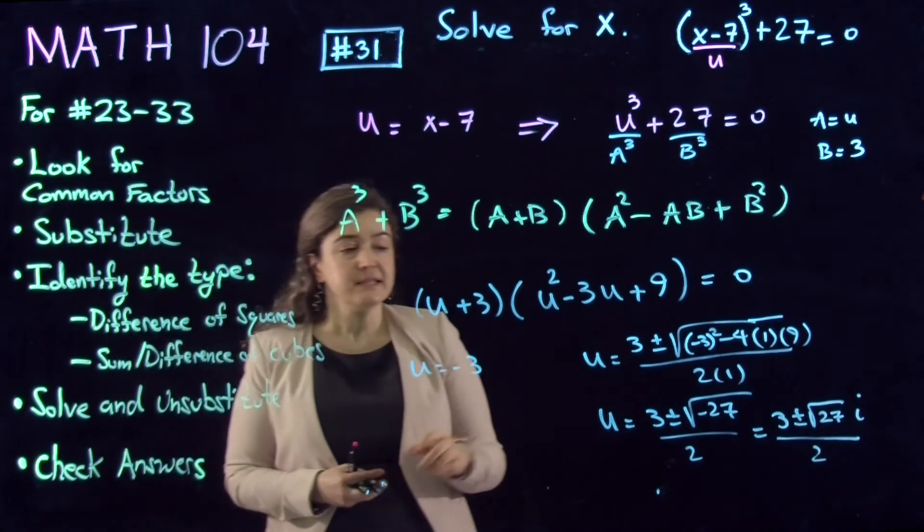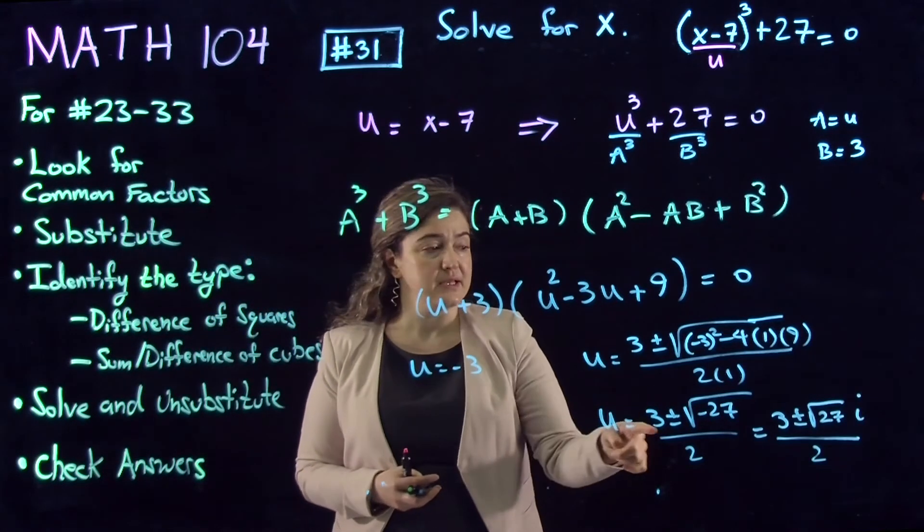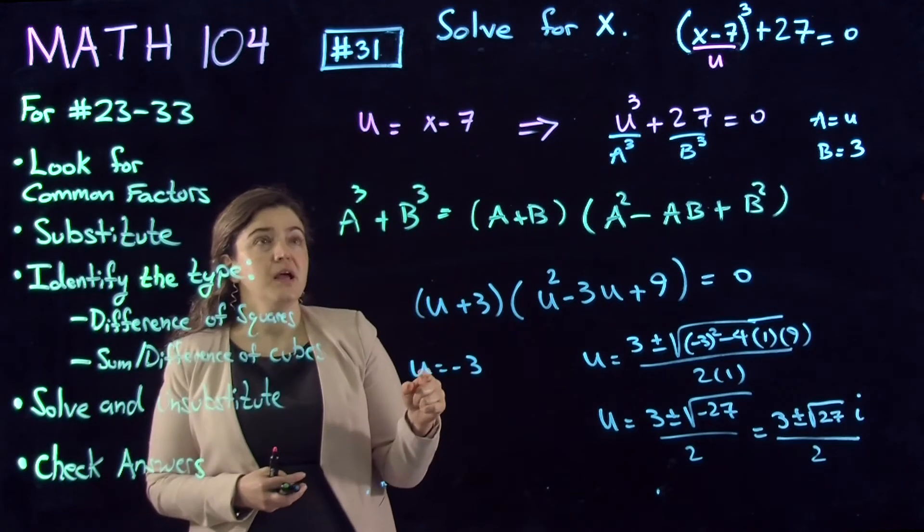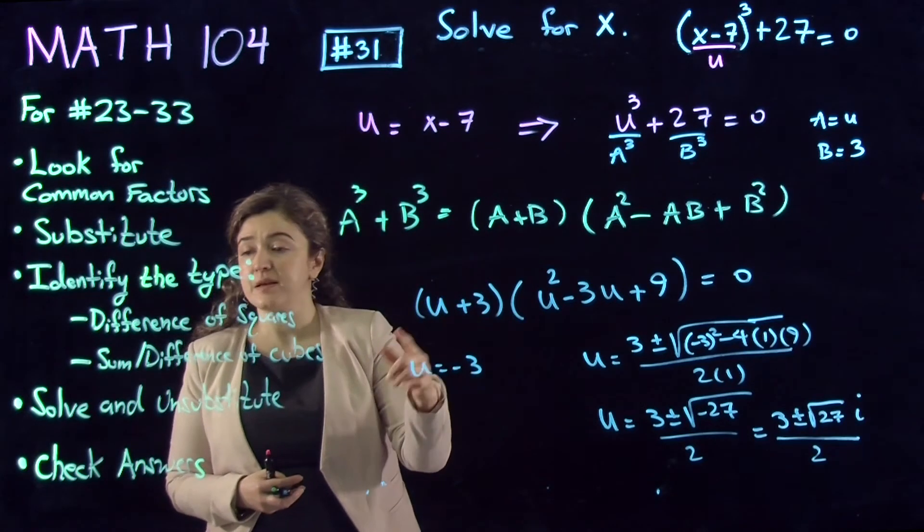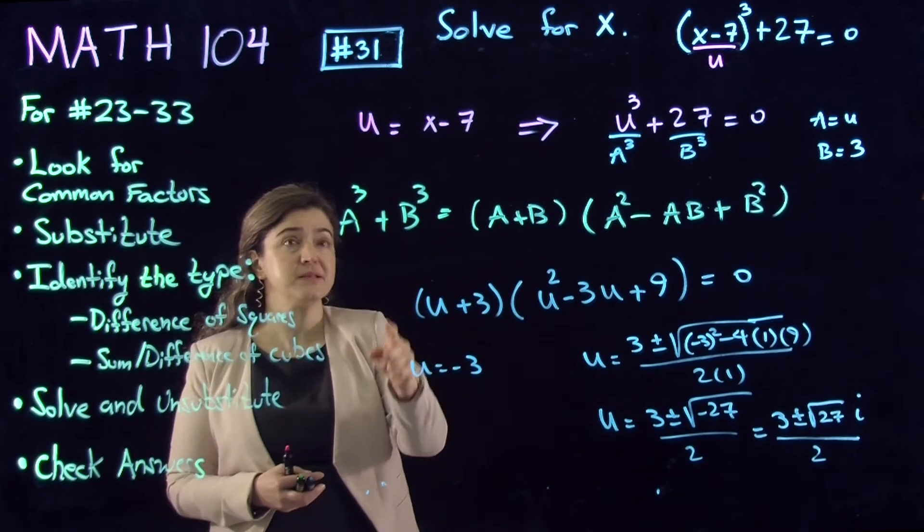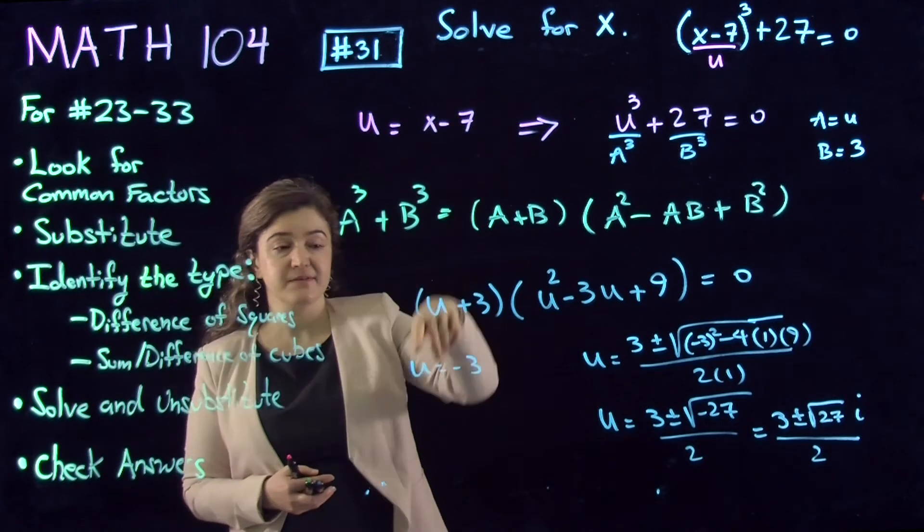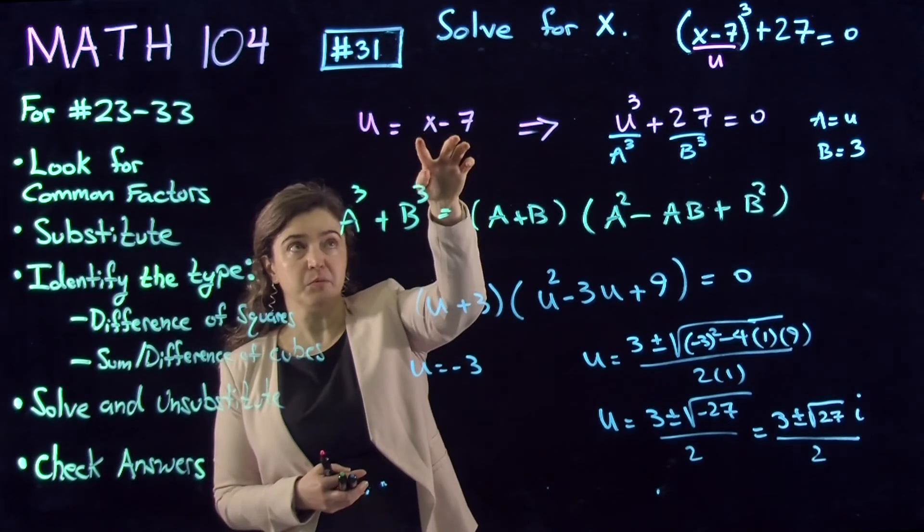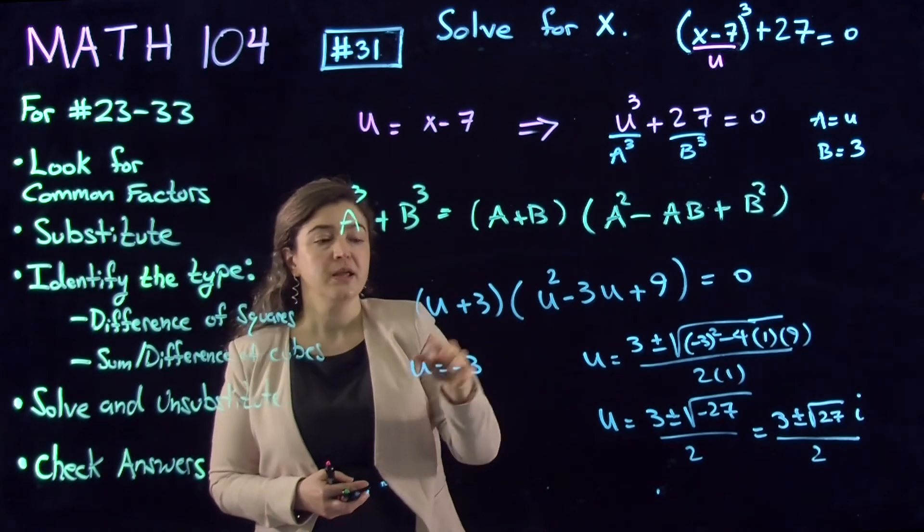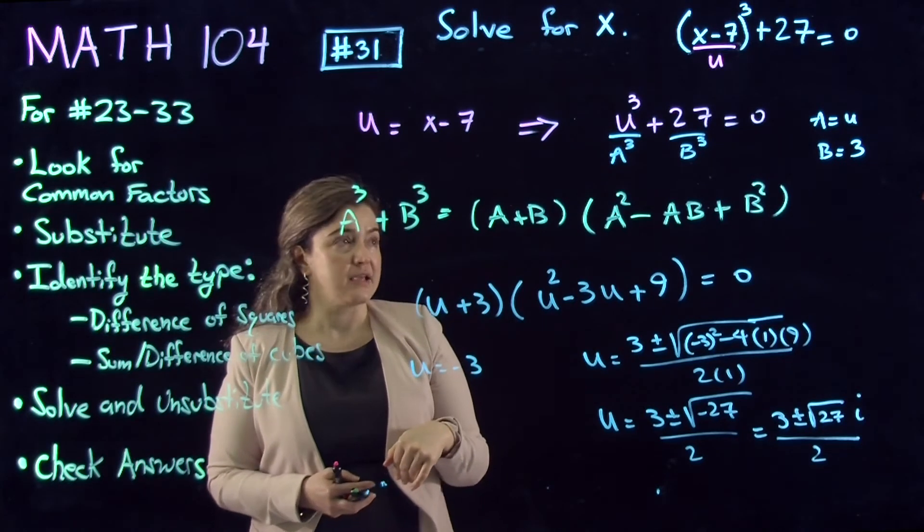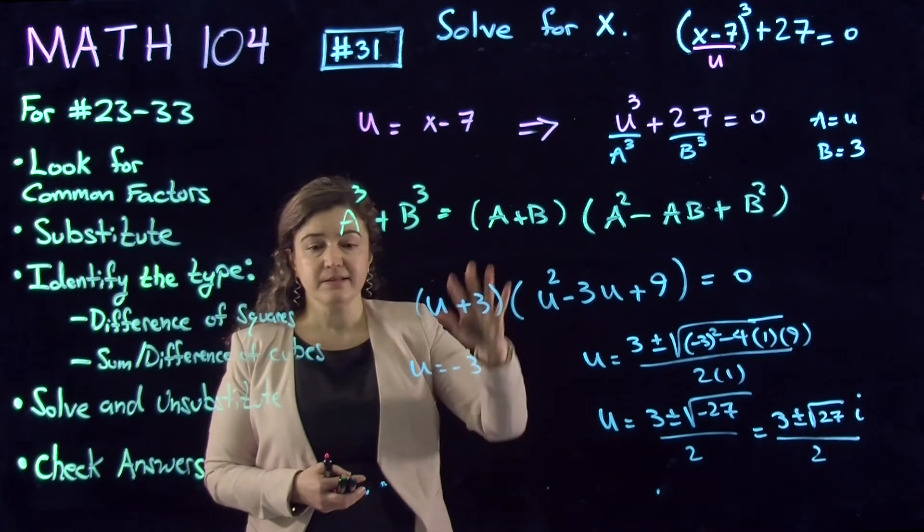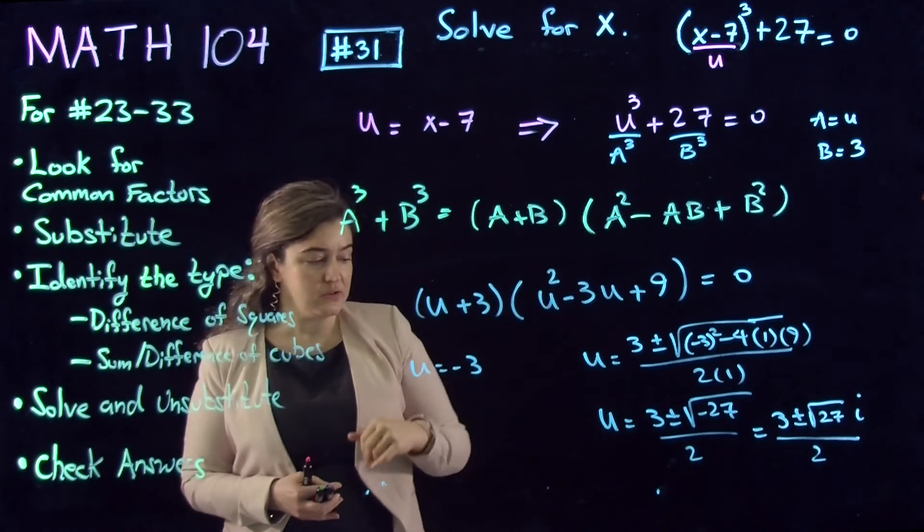Now, there's one more step to this, which would be un-substituting. That means substituting back the x expression for u and solving for x. I'm going to erase the board and continue doing that.